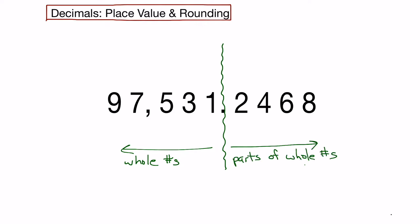Another way to think about it — let's say we had $1.50. The number on the left, the one, represents a whole dollar, while the number on the right represents part of a whole dollar. In this case, it would only be half of a whole dollar, or 50 cents.